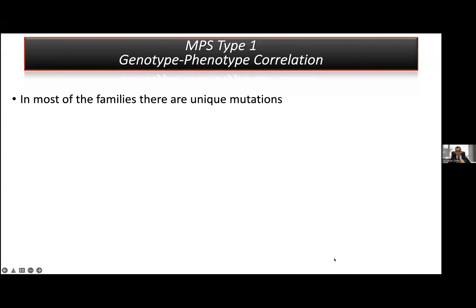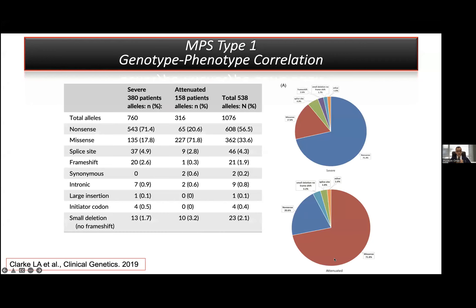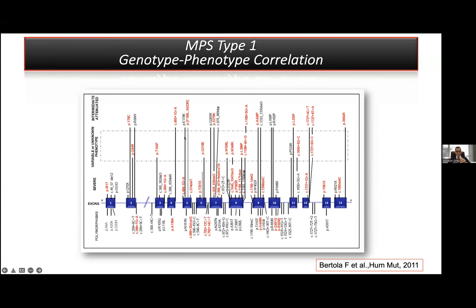Regarding genotype-phenotype correlation in MPS type 1, in most families there are unique mutations, but we have two frequent nonsense variants that are especially prevalent in Europe. The novel mutation detection rate is relatively high in MPS type 1. As expected, in especially severe cases we have nonsense variants, and in attenuated cases most of the variants are missense variants.